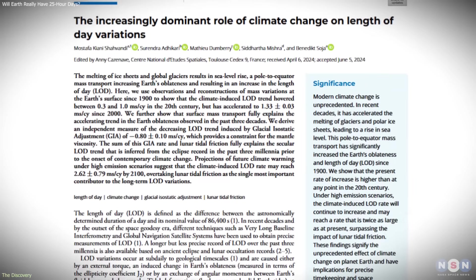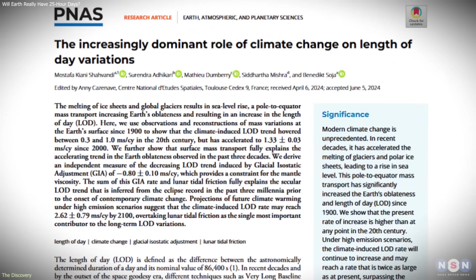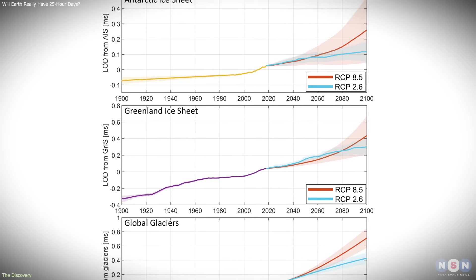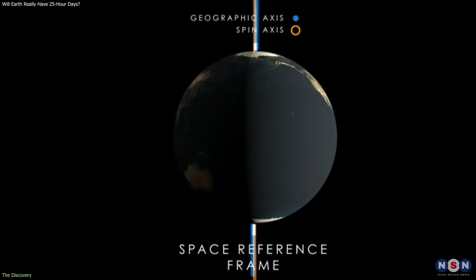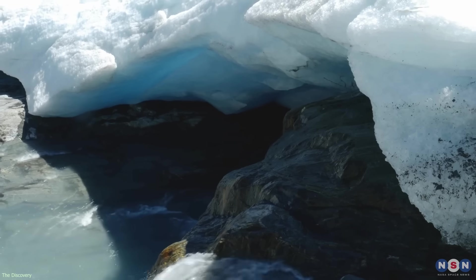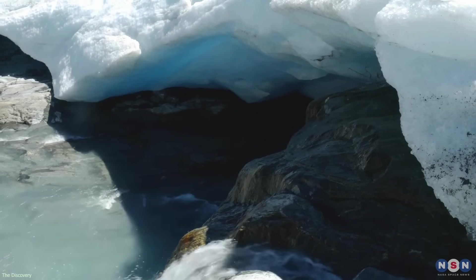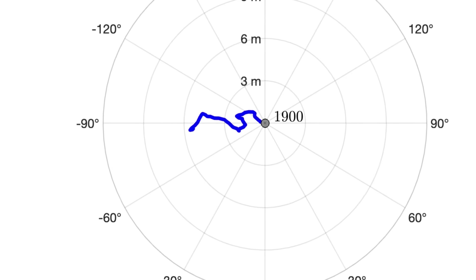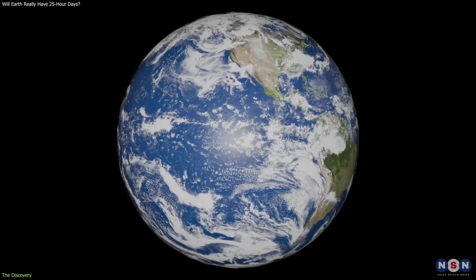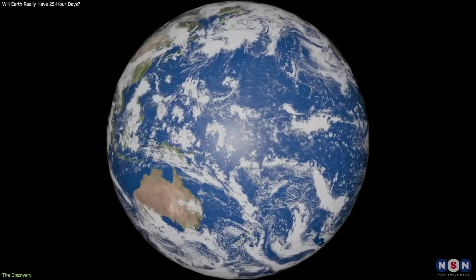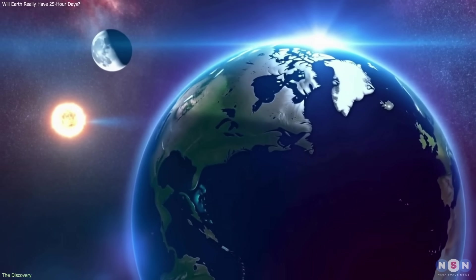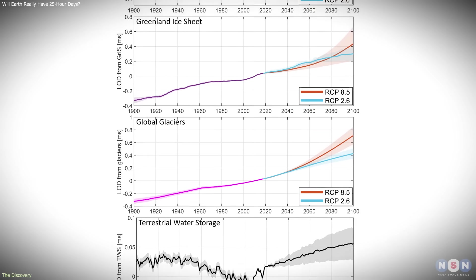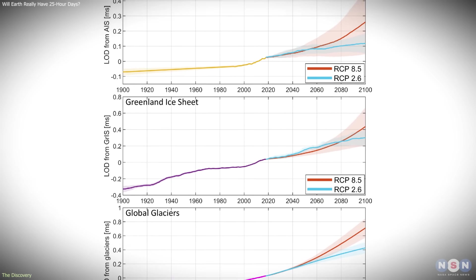Studies analyzing more than a century of Earth orientation data show that mass movement on Earth's surface, particularly the redistribution of water, has a measurable effect on rotation. As ice melts, groundwater is depleted, and water moves into the oceans, Earth's mass distribution shifts slightly. These effects do not dominate Earth's rotation, nor do they override the long-term gravitational interaction with the Moon, but they are now large enough to be detected and separated from other sources of variation.